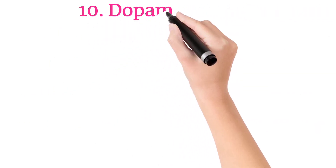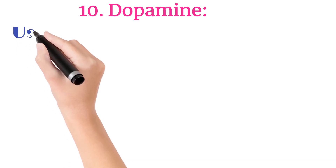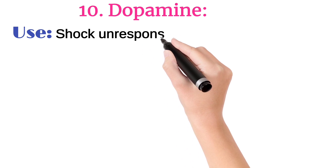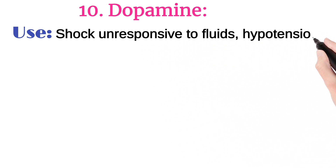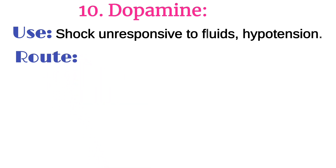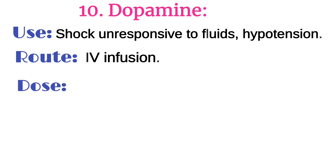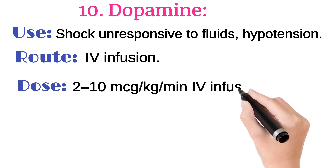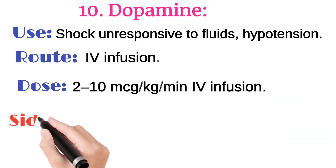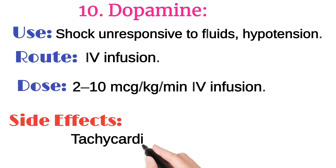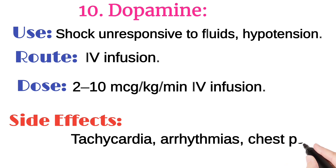And the last one, number 10, is dopamine. It is used in shock unresponsive to fluid and hypotension. It is injected intravenously, with a usual adult dose of 2 to 10 mcg/kg per minute IV infusion. Its side effects may include tachycardia, arrhythmias, and chest pain.